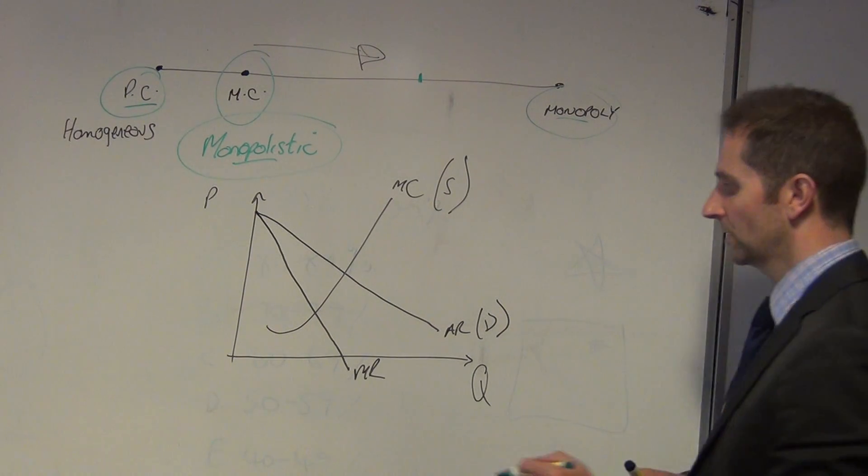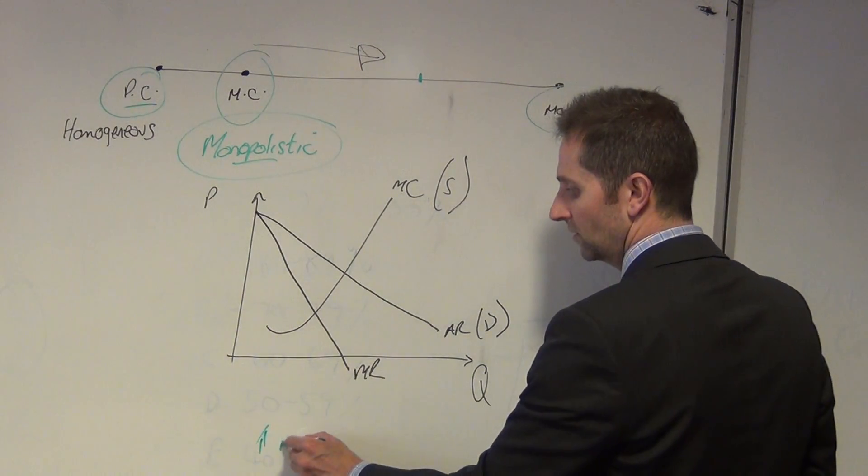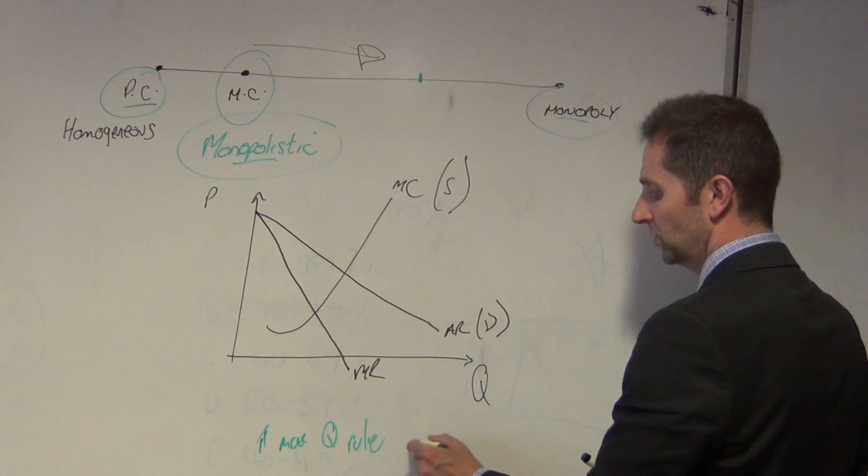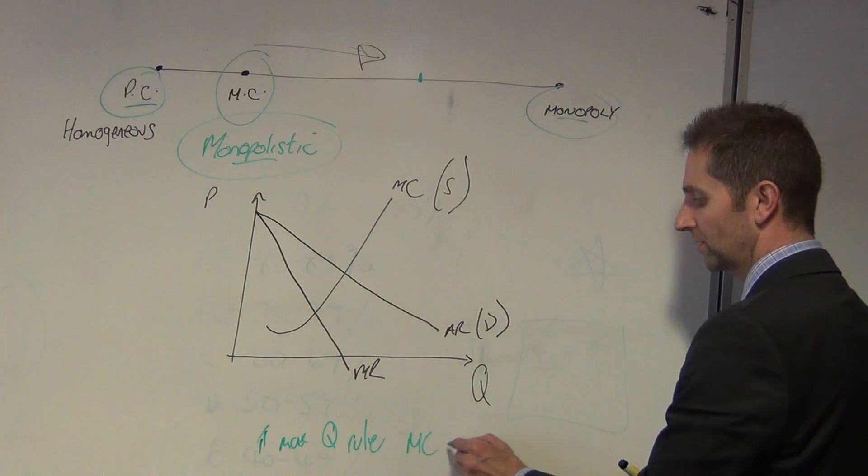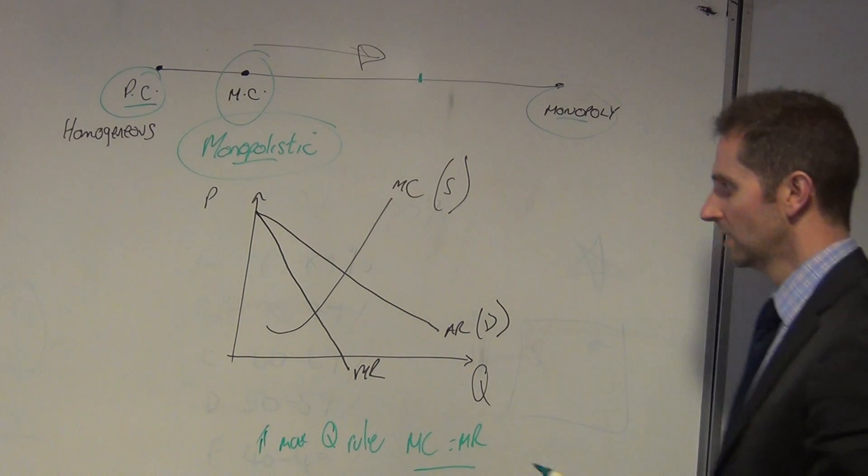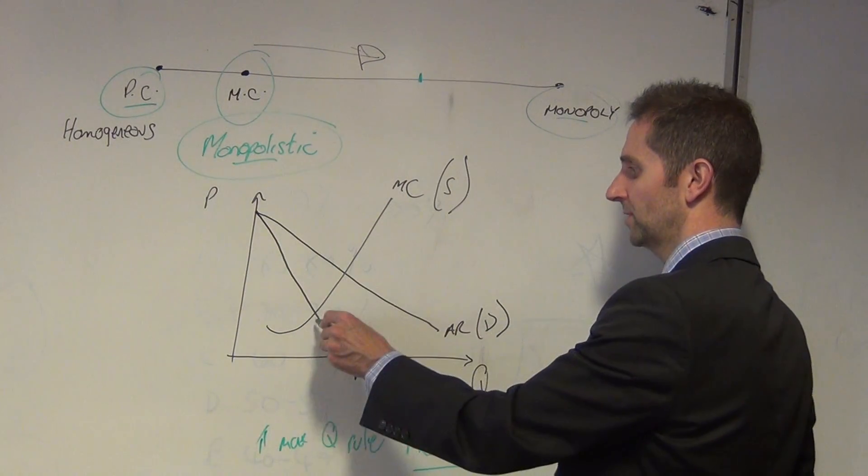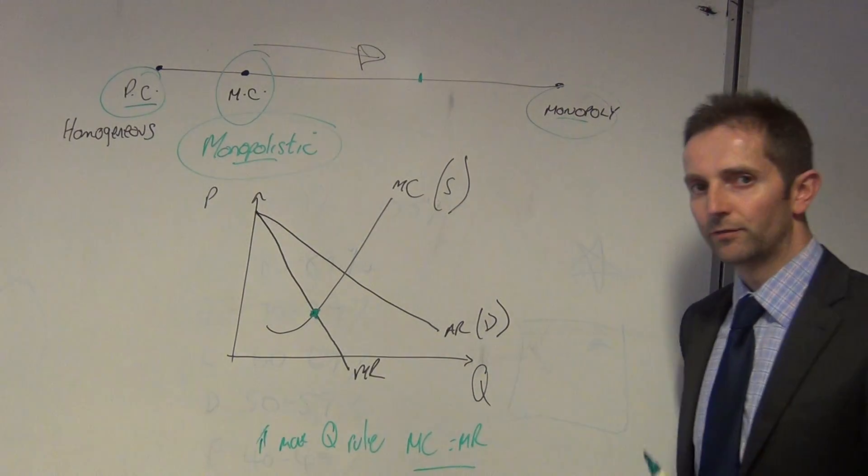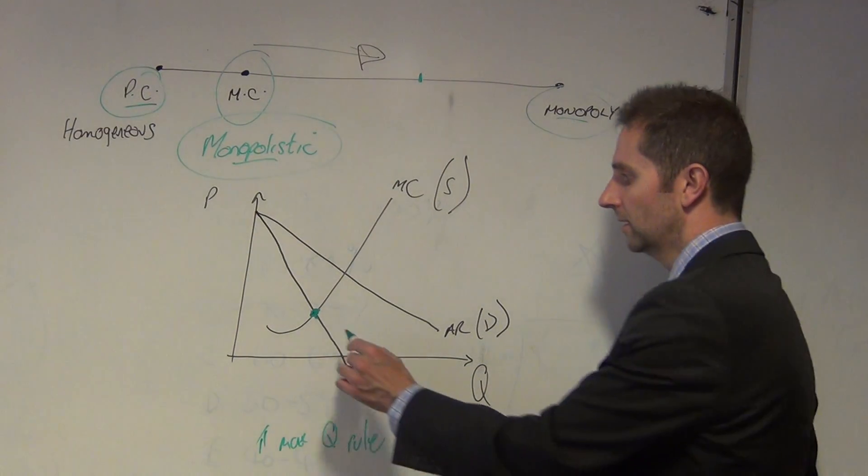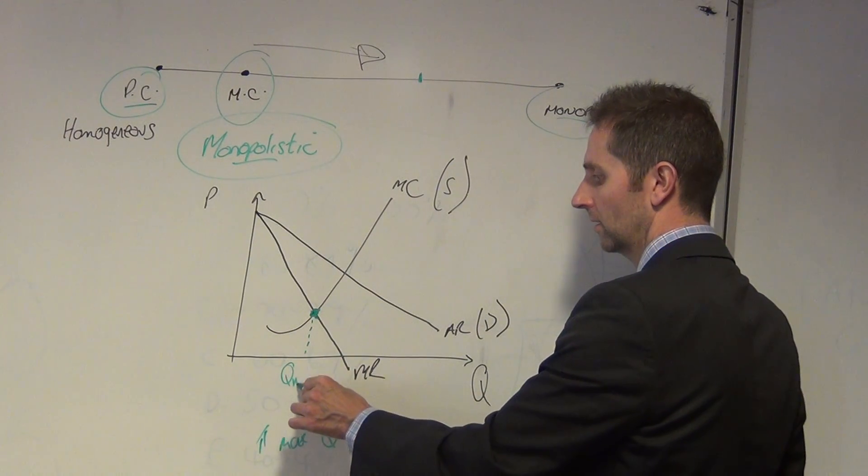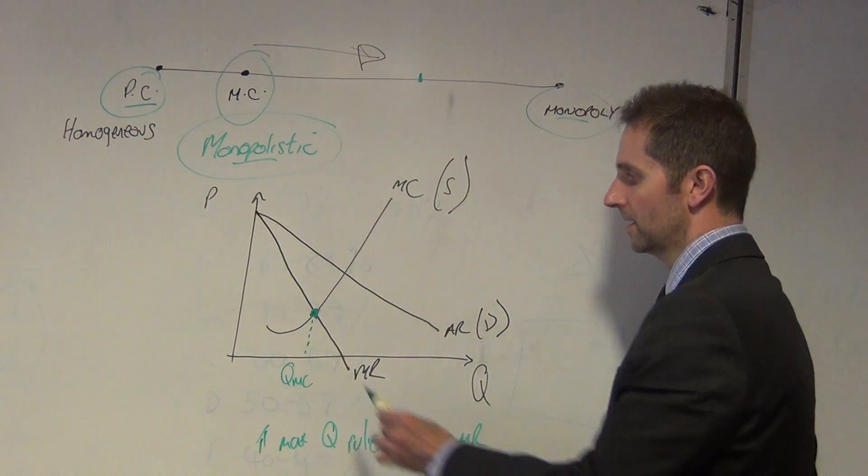So again, we want to be talking about the profit maximizing output rule, which is where MC, marginal cost, is equal to marginal revenue. And so we're looking on this diagram for monopolistic competition for the intersection of MC and MR, which is at this point here.